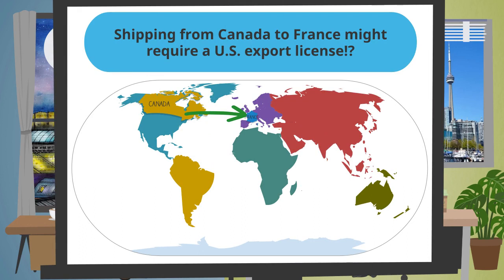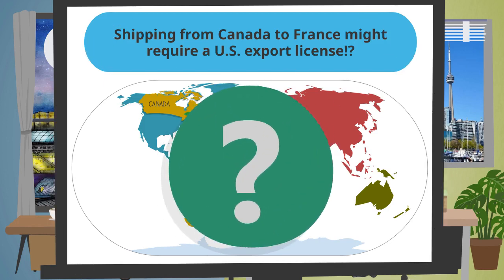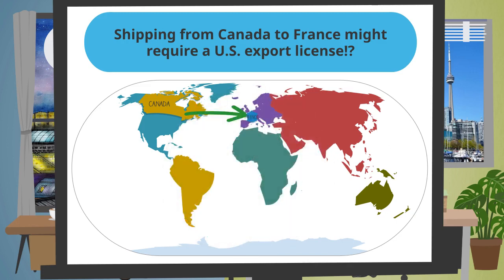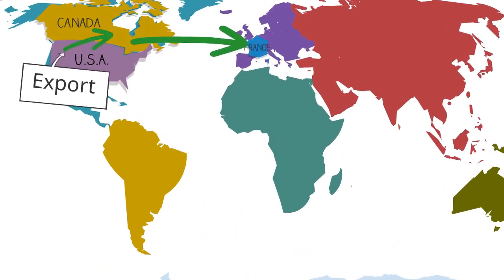A screen appears with a map of the world and a blue text box: Shipping from Canada to France might require a U.S. export license? A green arrow appears pointing from Canada to France, then a question mark appears. Elsa answers: That's a great question, François. This happens because some of our product comes from the United States and is subject to the Export Administration Regulations. What we have here is called a re-export.